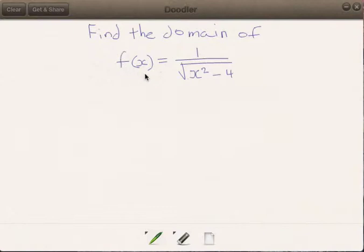Alright, so we're given the function f(x) is equal to 1 over the square root of x squared minus 4. We want to find the domain of this function. The first thing you can note is that x squared minus 4 is a perfect square, and that will help us later on in our factorization.